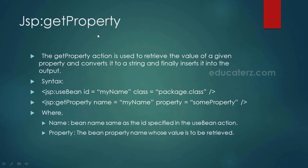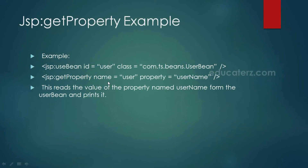The getProperty action tag is used to retrieve values from a bean object. First specify the bean using useBean id, then use: <jsp:getProperty name="beanId" property="propertyName">. For example, to get the username property from a bean called user: <jsp:getProperty name="user" property="userName"> — this reads the value of the property named userName from the user bean and prints it. The getProperty tag also prints the value on the page.